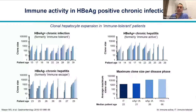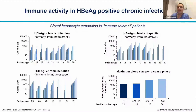Regarding clonal hepatocyte expansion across disease phases: this is associated with risk for HCC development, and maximum clone sizes are seen in patients who develop HCC. Notably, patients as young as 15, 17, and 18 in the immune-tolerant phase have clone sizes virtually no different from those in the immune-active phase, suggesting immune pressure driving clonal expansion with HBV integration — and if left unaddressed, these patients may be at risk for progressive disease and HCC.